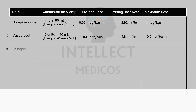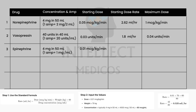Epinephrine: take four ampules of 1 mg each — 4 mg total in 50 ml. The starting dose is 0.01 mcg/kg/min, which for a 70 kg patient comes to 0.53 ml/hr on the infusion pump. You can take a screenshot of the full dosing chart once it's complete. The maximum dose of epinephrine is 1 mcg/kg/min, same as norepinephrine.